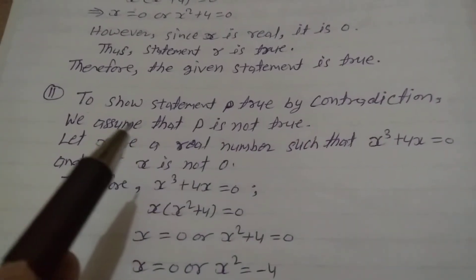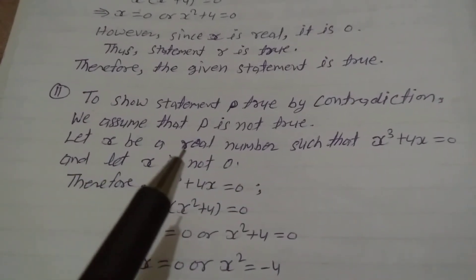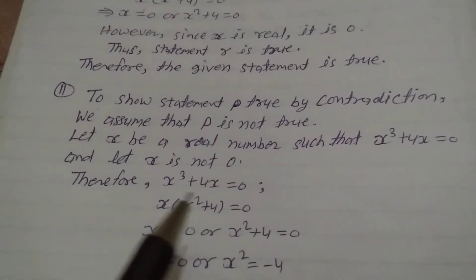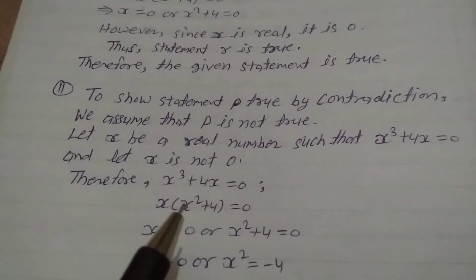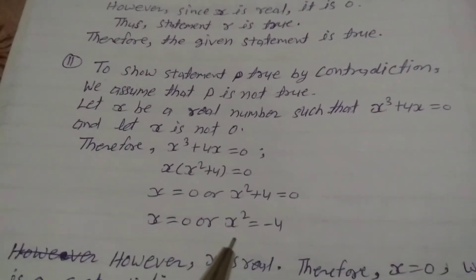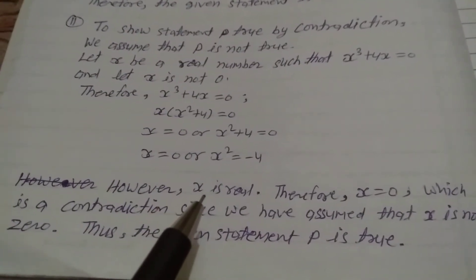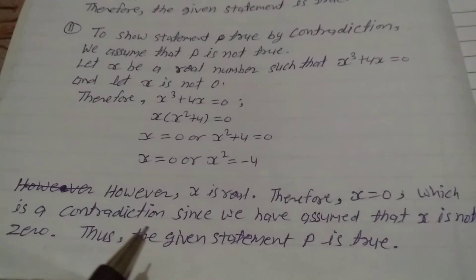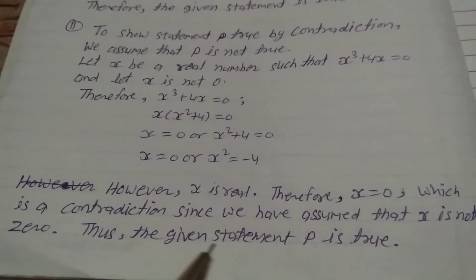Second method — Contradiction: To show statement p is true by contradiction, we assume that p is not true. Let x be a real number such that x³ + 4x = 0, and let x not equal 0. Then x(x² + 4) = 0, so x = 0 or x² + 4 = 0, meaning x = 0 or x² = −4. However, since x is real, x = 0, which is a contradiction since we assumed x is not 0. Thus the given statement p is true.